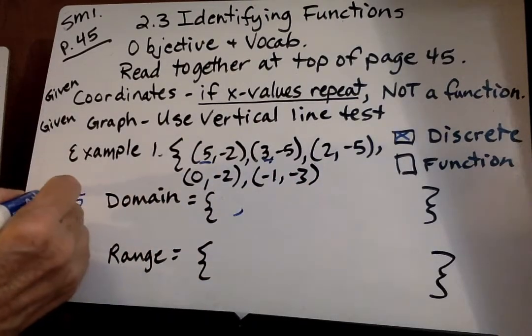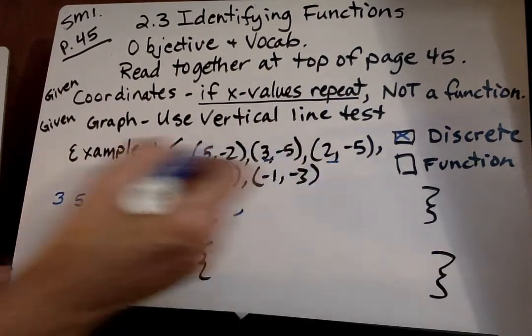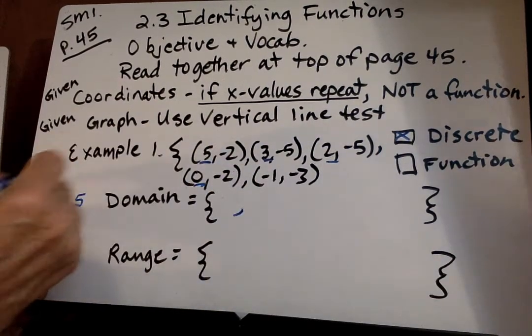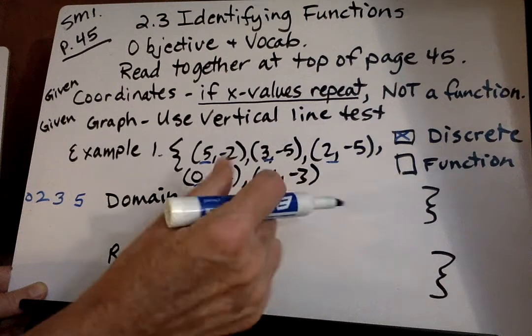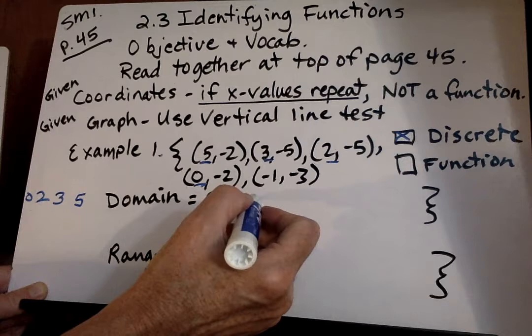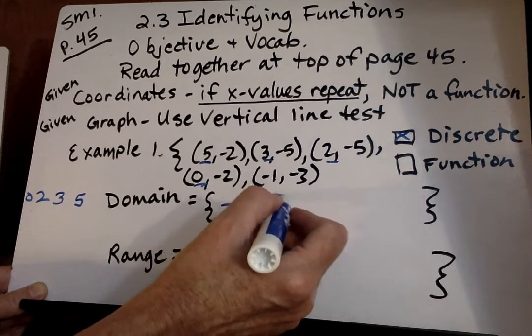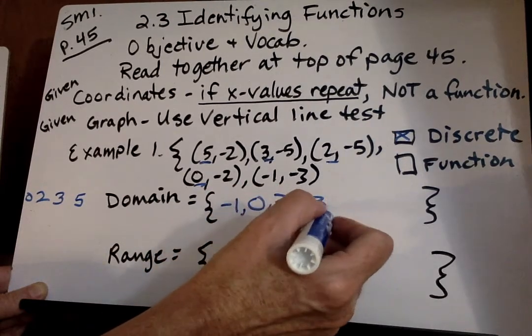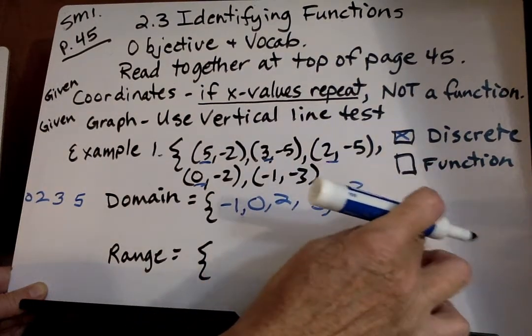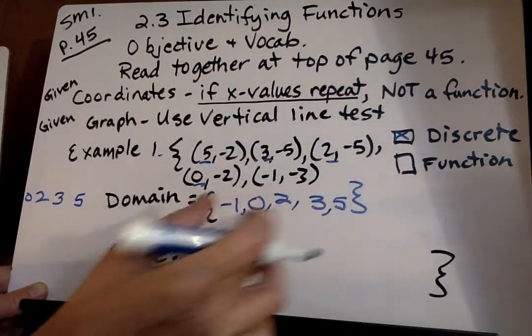So let's see we have 5, we have 3, 2, 0 and negative 1. So if we're going to do it in order from least to greatest we're going to start with negative 1 first and then 0 and then 2 and then 3 and then 5. So there we have our domain.